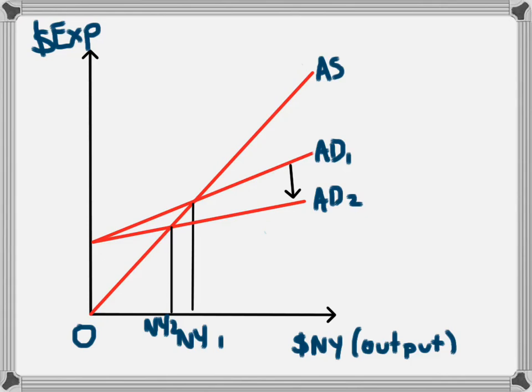Again, it would make sense that in an economy, if people were saving more money and money was being taken out of the economy, that the level of national income and output would fall.